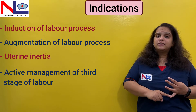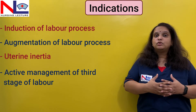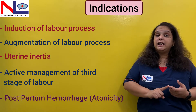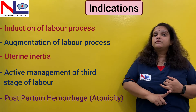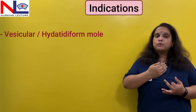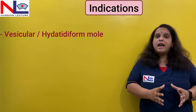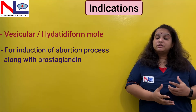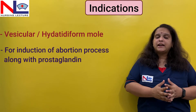Oxytocin can be administered to reduce bleeding and actively manage the third stage of labor, or in postpartum hemorrhage where the cause is uterine atonicity and the uterine tone is insufficient to control bleeding. It can also be used to evacuate the uterus in vesicular mole, where grape-like vesicles are formed. Additionally, for legally induced abortion, this drug can be used along with a prostaglandin analog such as PGE1 or PGE2.